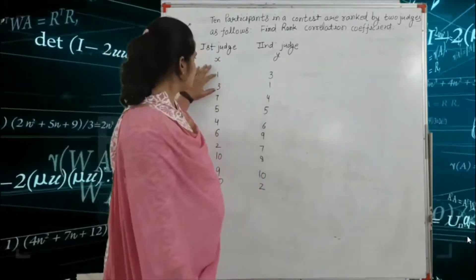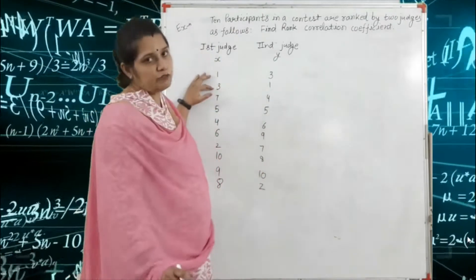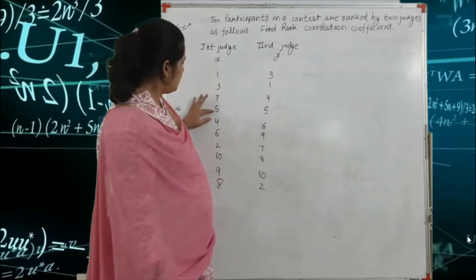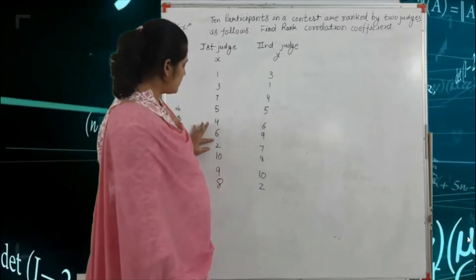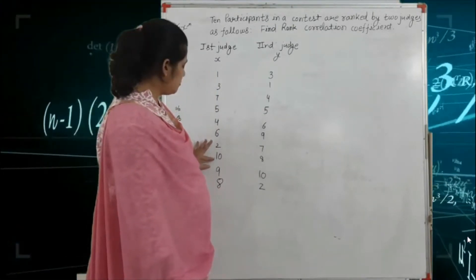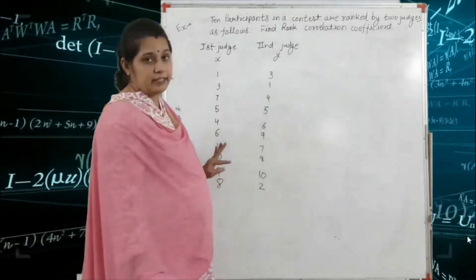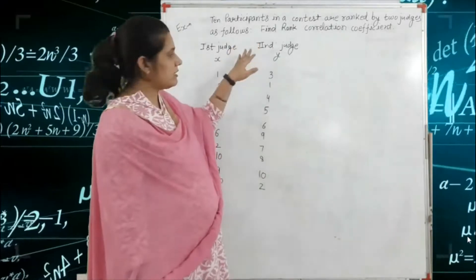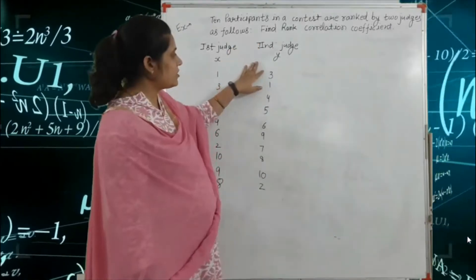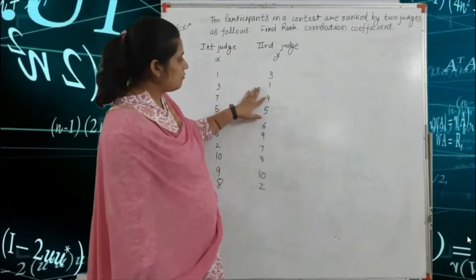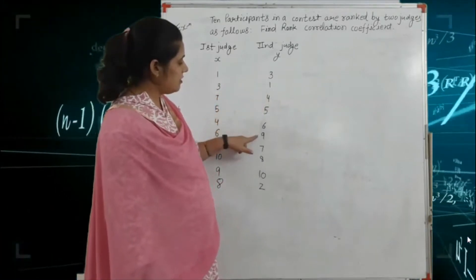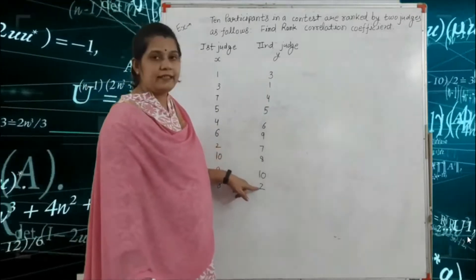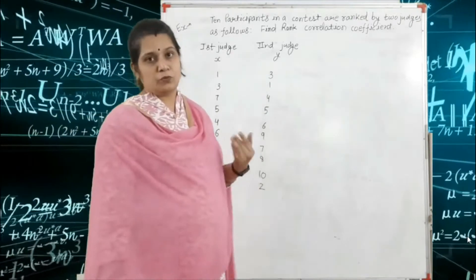The ranks given by the first judge are: 1, 3, 7, 5, 4, 6, 2, 10, 9, and 8. The ranks given by the second judge are: 3, 1, 4, 5, 6, 9, 7, 8, 10, and 2.